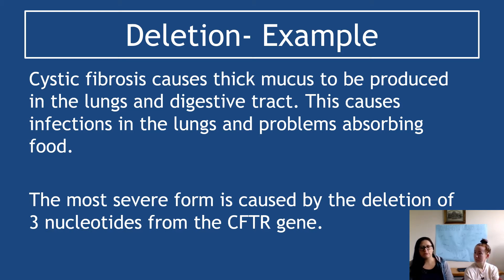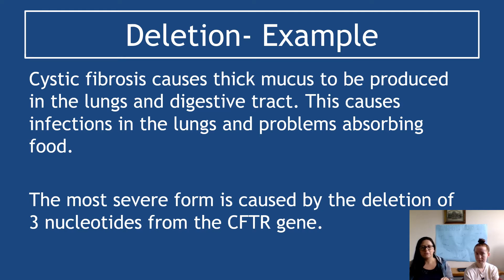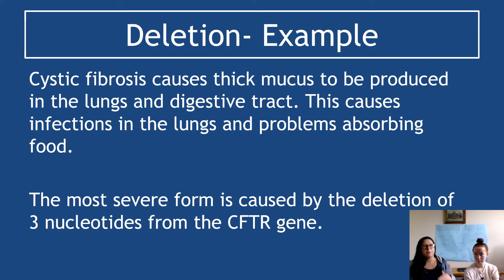Something like one in 20 people in the world are carrying one copy of the mutated cystic fibrosis gene, but it's recessive, so the second copy keeps you safe. Cystic fibrosis affects approximately one in 10,000 people, and there are different severities — it's a spectrum. People with fairly mild symptoms can expect to live to 60 or 70 years of age, whereas quite severe cystic fibrosis may result in a life expectancy up to around 21 years old.